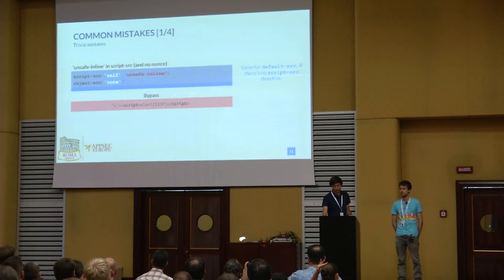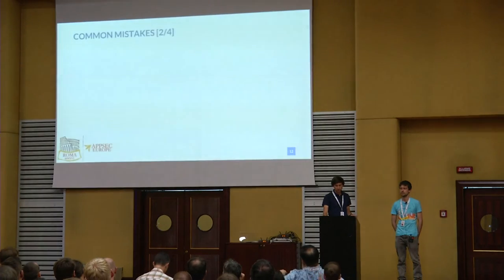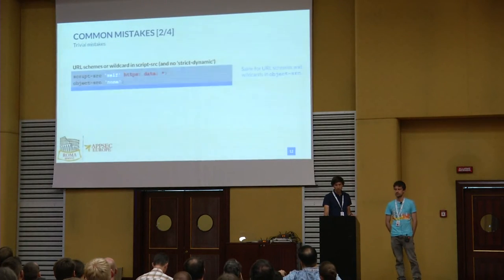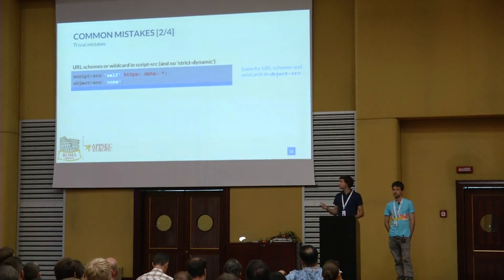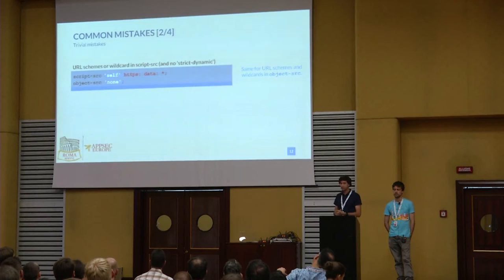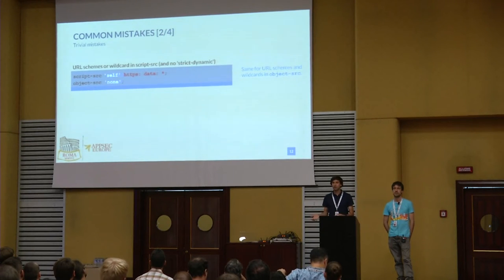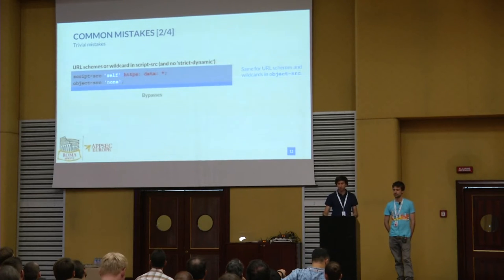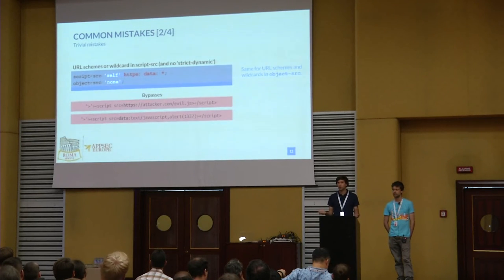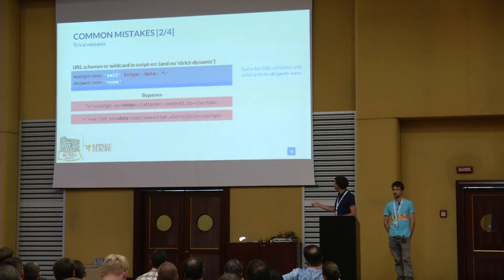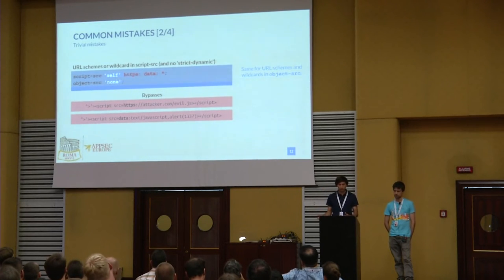Another trivial mistake: people add schemes like HTTPS or wildcards like '*' as sources. You can't do inline scripts, but you can source your script from anywhere — you could source attacker.com/evil.js and it executes. The same holds for object-src. A less trivial but common mistake: restricting script-src but forgetting to add default-src or object-src, so an attacker could inject an object tag allowing script execution.